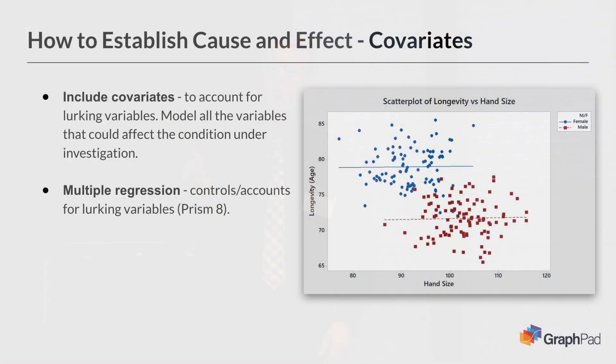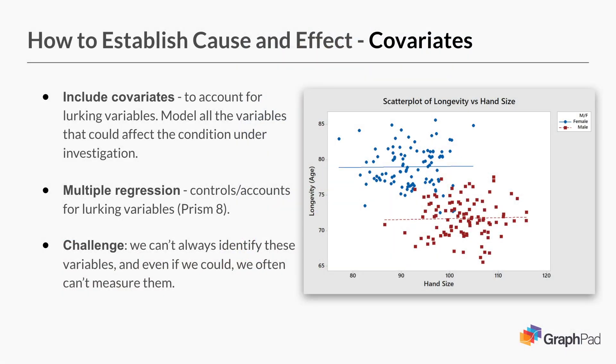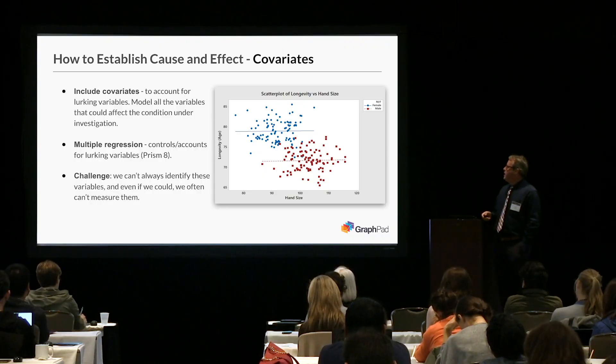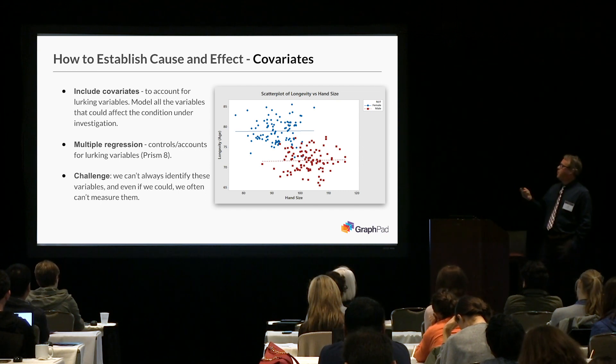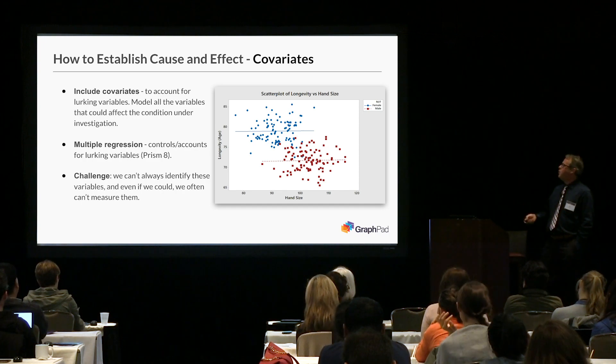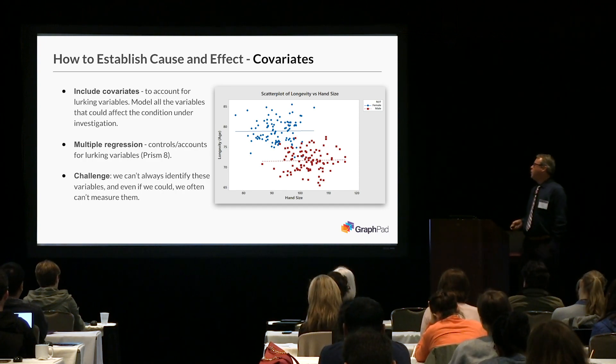Covariates do a decent job of attempting to control for lurking or hidden variables. Multiple regression is the tool you'll use most of the time to control for those lurking variables, and Prism 8 does have multiple regression. The challenge is we can't always identify — and very often can't identify — all the variables we need to include. And even if we could, we can't measure all of them. An observational dataset that just has a bunch of decent covariates probably isn't good enough, but at least it's an approach that attempts to help you know what's cause and effect.